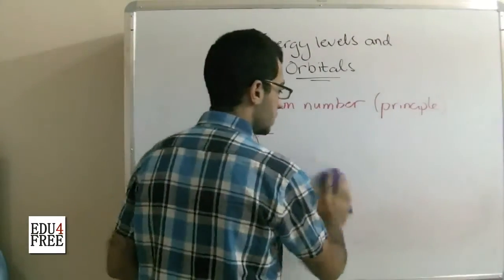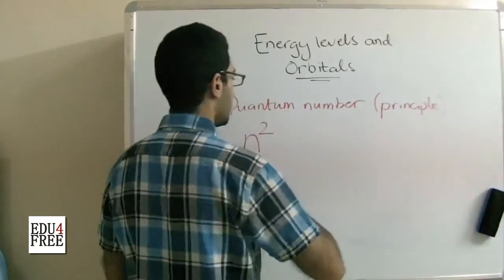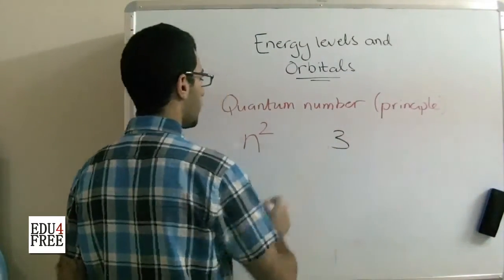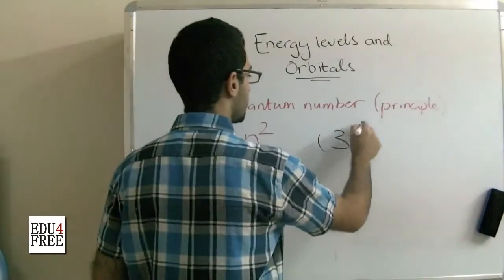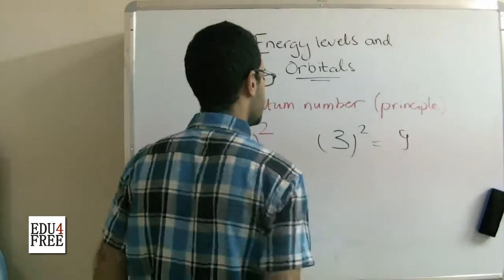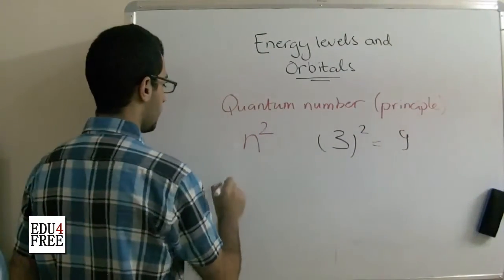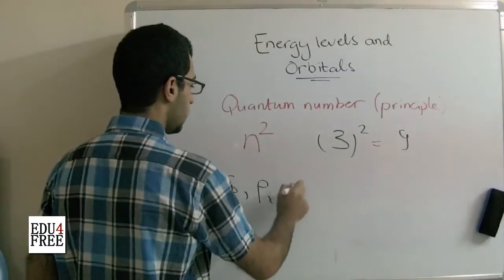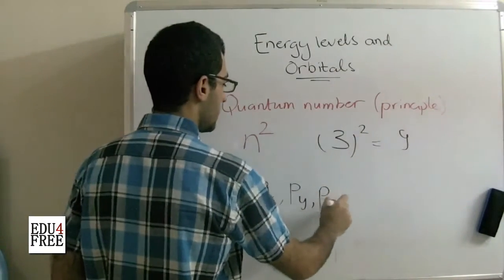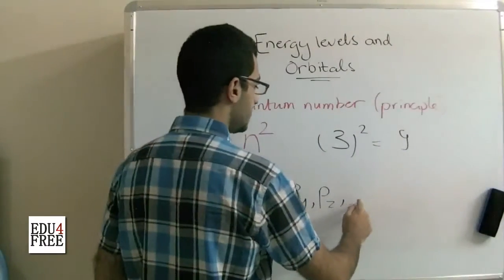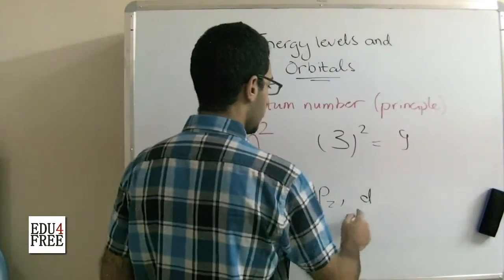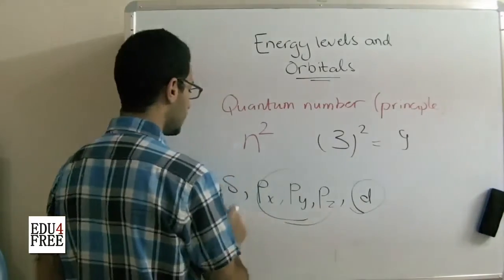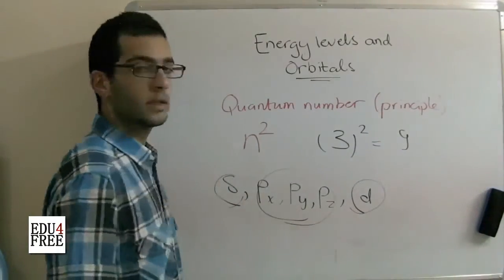For example, the energy level number 3. So 3 of power 2 gives us 9. So let's see, we have the S, we have the P X, P Y, P Z and we have 5 d orbitals. So 5 plus 3 is 8 plus 1 is 9 and so on.